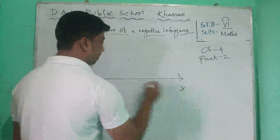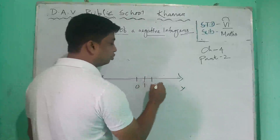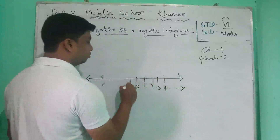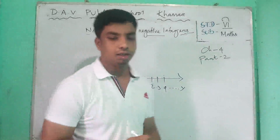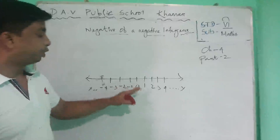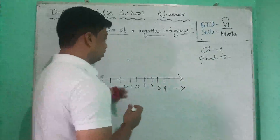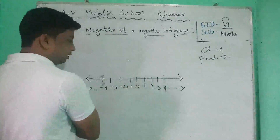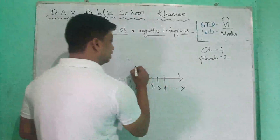If we draw a number line, here is a number line on the x-axis. The positive integers are 1, 2, 3, 4 and so on, and the negative integers are minus 1, minus 2, minus 3, minus 4 and so on. We can say that if we go to the right side, the positive integers increase.